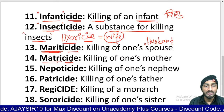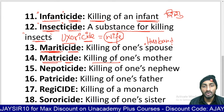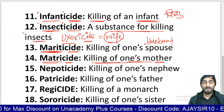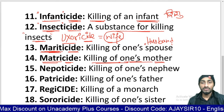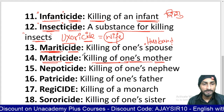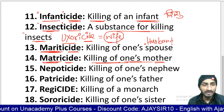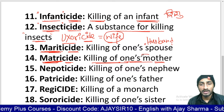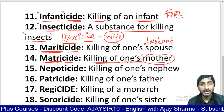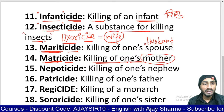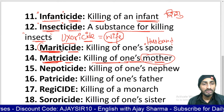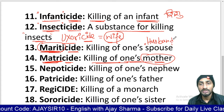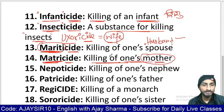Matricide means killing of one's mother. So 'matri' is the root for mother, and 'mariti' is the root for killing of one's husband. Matricide means killing of one's mother.